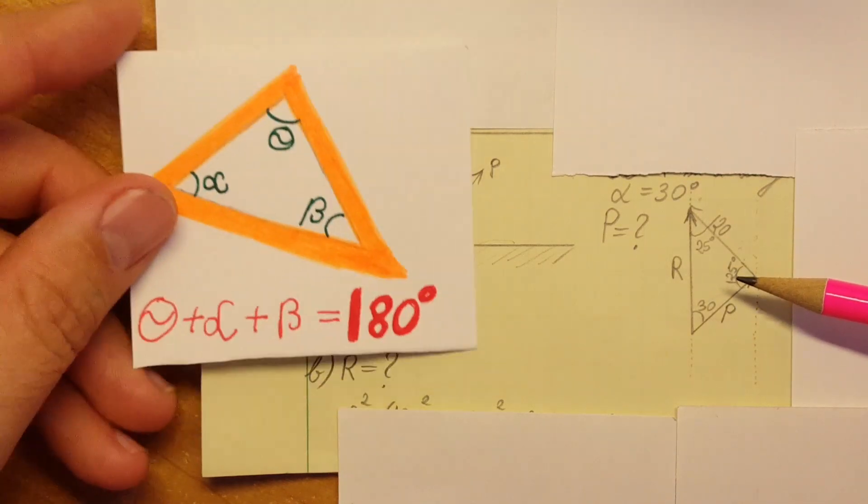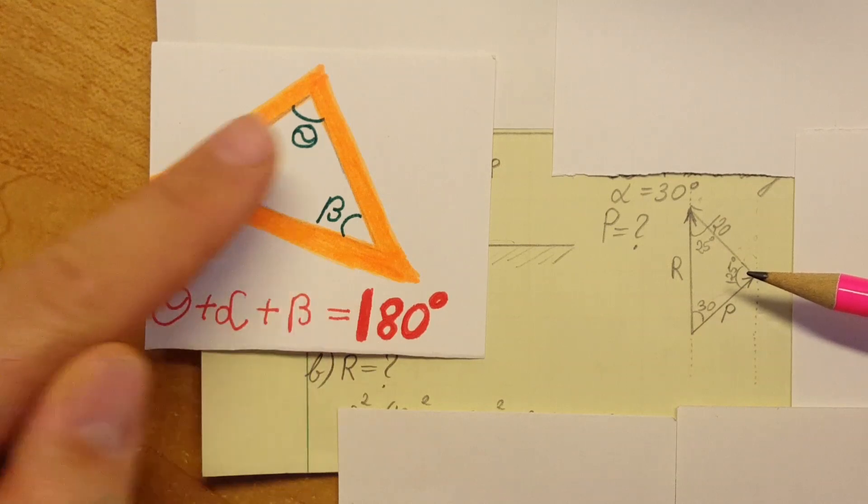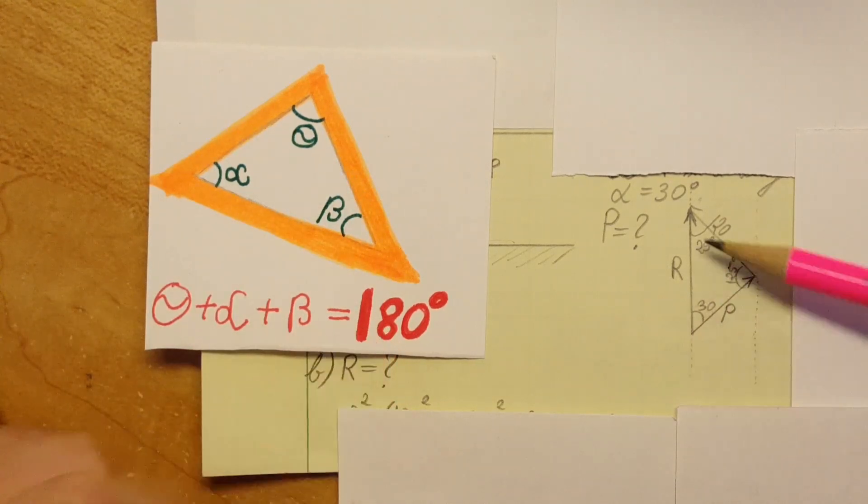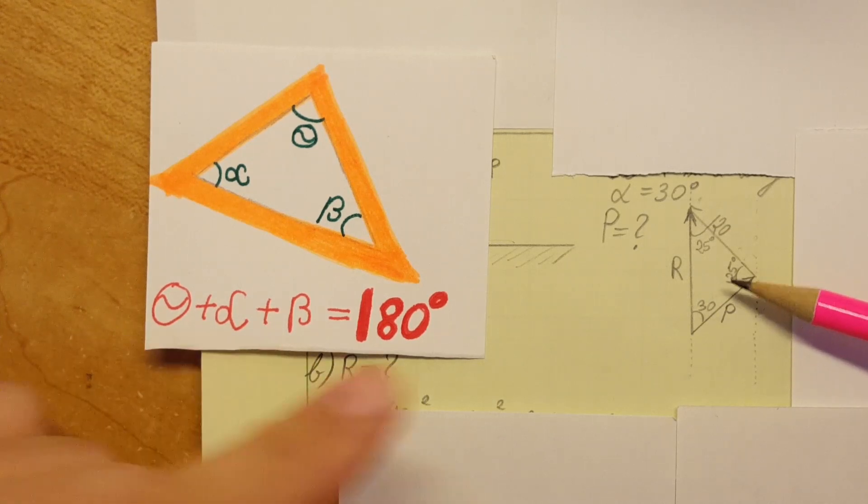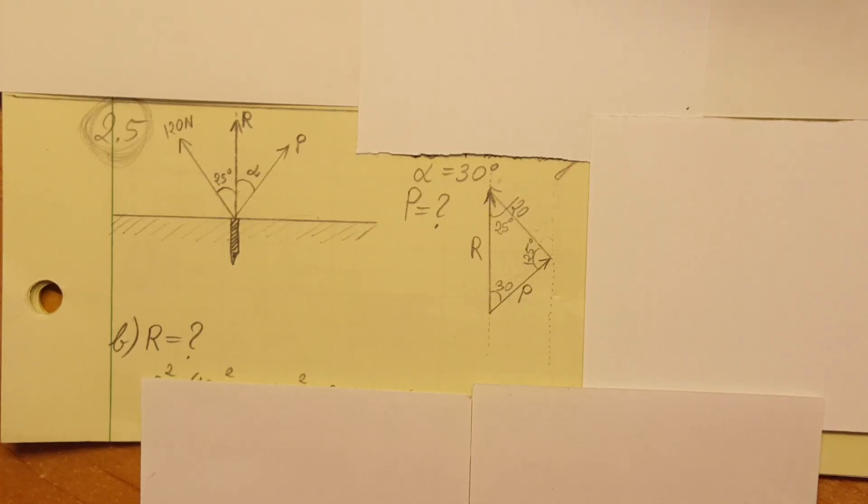Now in order to calculate this angle right here, we're going to resort to this: we know that all the angles together are 180. So since we do know this one and this one, 180 minus 25 minus 30 will give us 125 degrees.